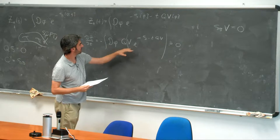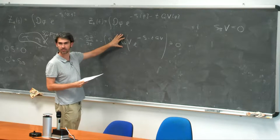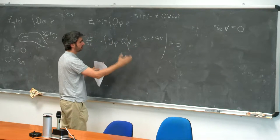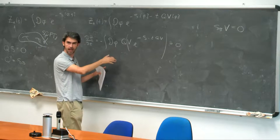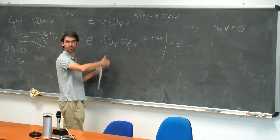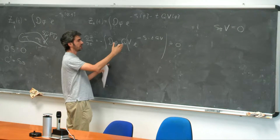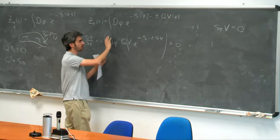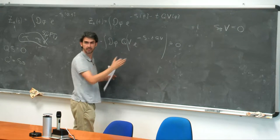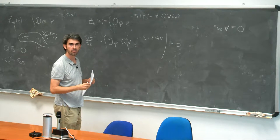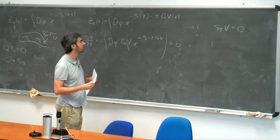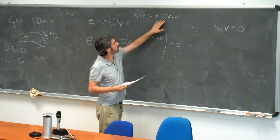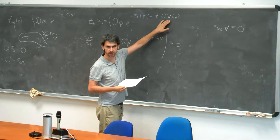More precisely, if this was a bosonic variation, we can write the path integral and then the same object with a field redefinition when we act with the bosonic symmetry. The difference is given by the action of the bosonic symmetry, but since it was just a field redefinition, the action of the bosonic symmetry is zero. But Q squared acting on V should be zero — no, this is not zero, this is the Q variation of something, Q-exact it's called.